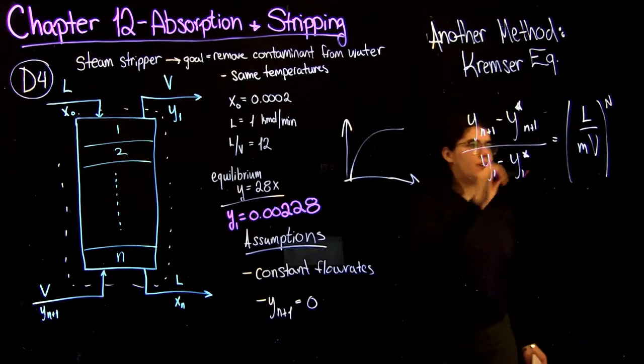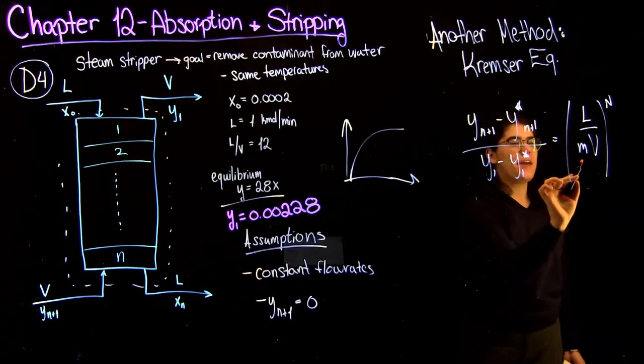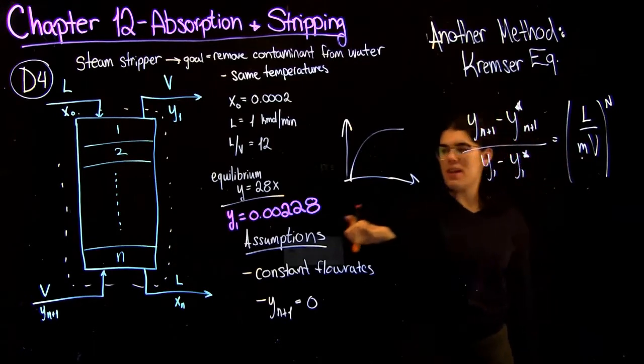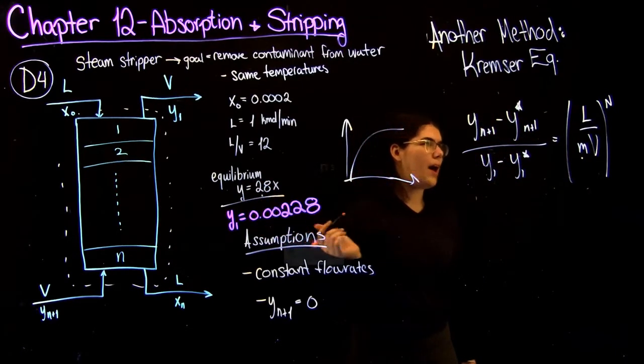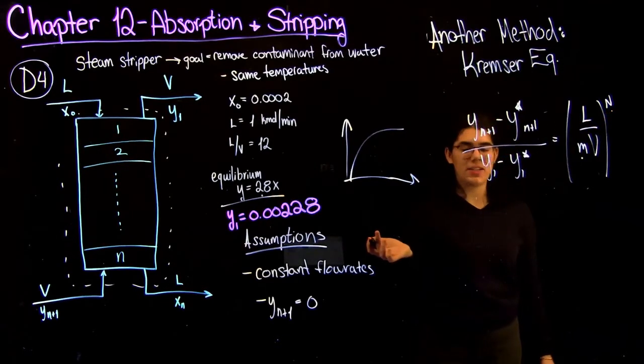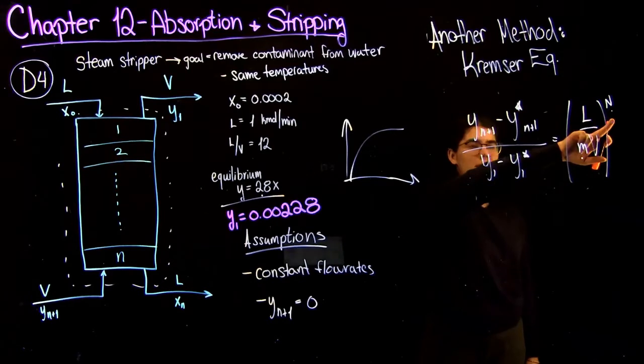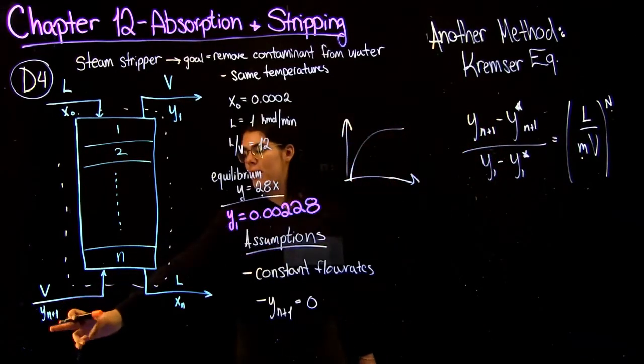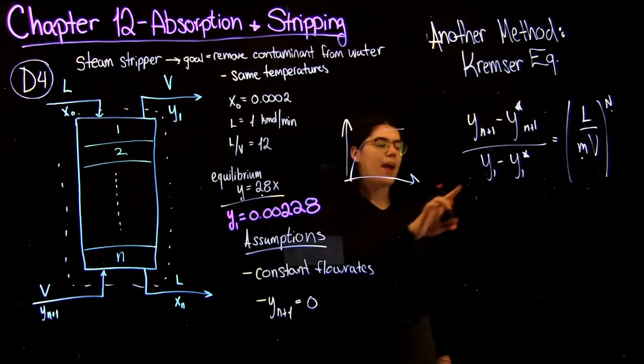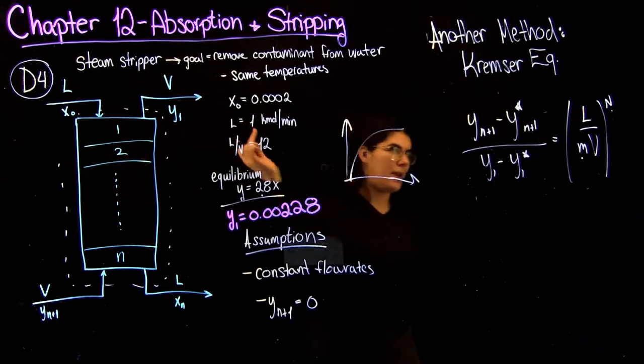So in this equation you have your l over v, which by now you should know what that means. Your m is just going to be equal to your slope of your equilibrium line here. Your n is the number of stages that you would usually get using the McCabe-Thiel method, but this time we're actually solving for it. Your y n plus 1 here is your vapor composition entering the column and your y1 is your vapor composition leaving the column.